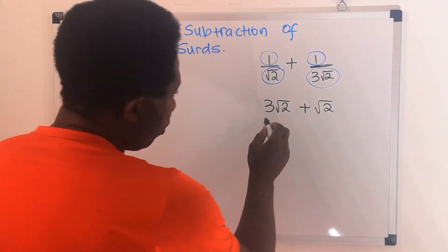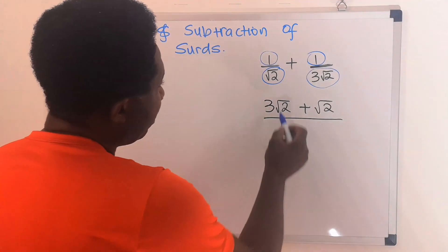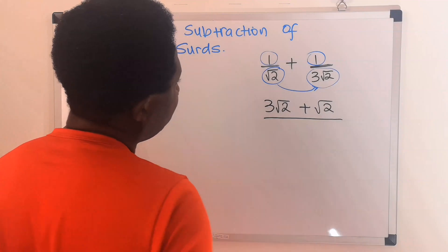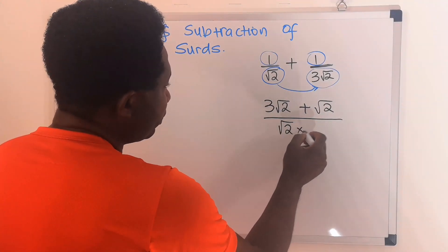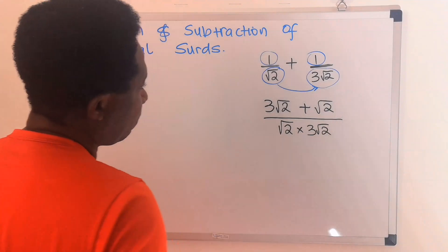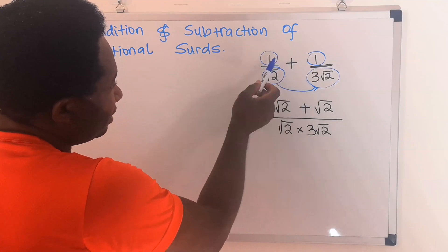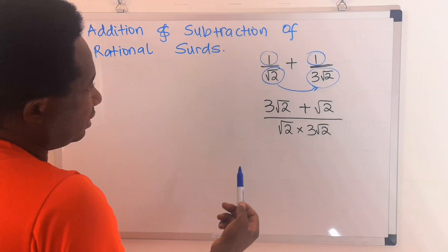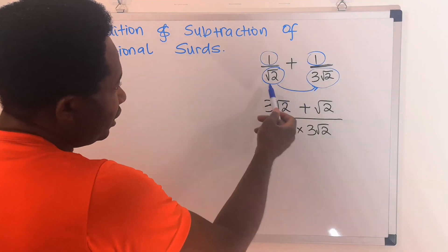Next, we are going to draw a line at the denominator. This will multiply this, and we are going to have root 2 multiplied by 3 root 2. Remember, we went like this — first the left, plus, then the right, and lastly we considered the denominator.